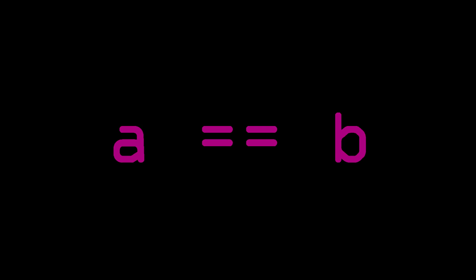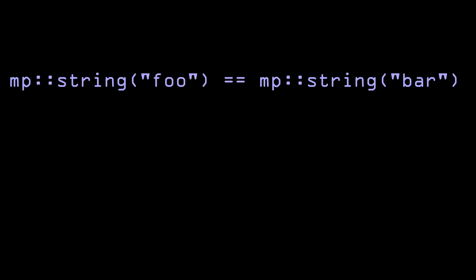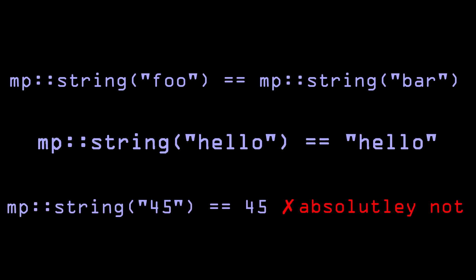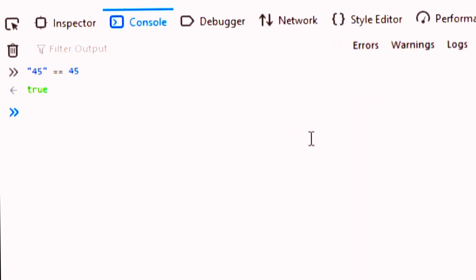Another important feature with strings is comparison. I decided to make two equality operator overloads: one that takes a reference to another string object, and one that takes a regular C string. I'm not adding any more types of comparison, like an integer comparison for example, because this only causes problems. If you don't believe me, look no further than JavaScript, which needed a whole new equality operator for this very reason.